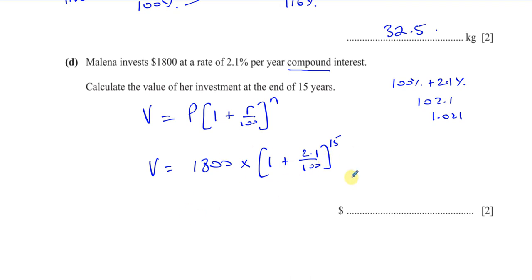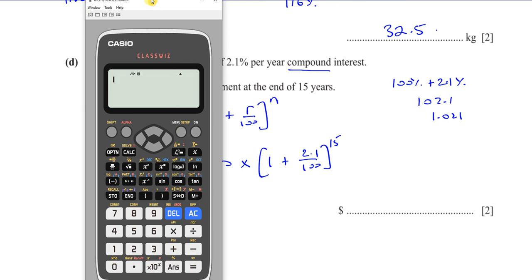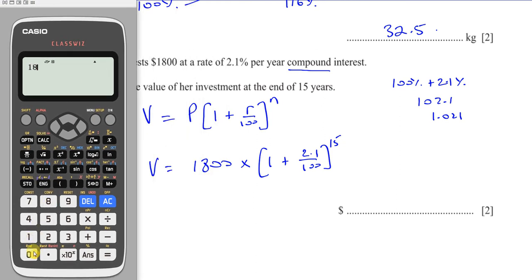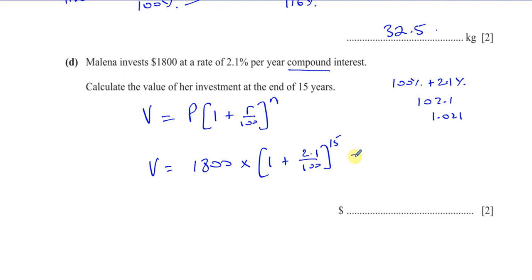So you end up with 1,800 times 1.021 to the power of 15, and that gives you the new investment value of 2,458.43 continuing.